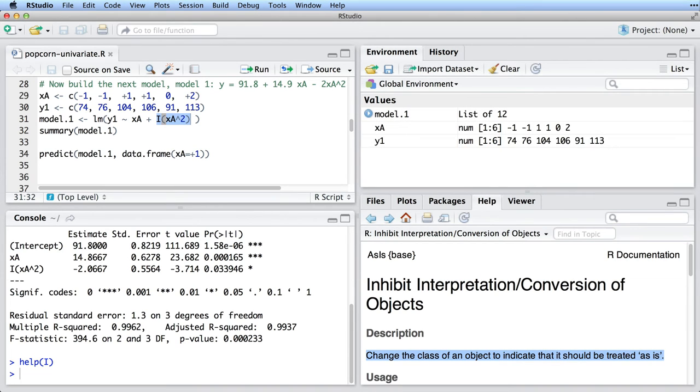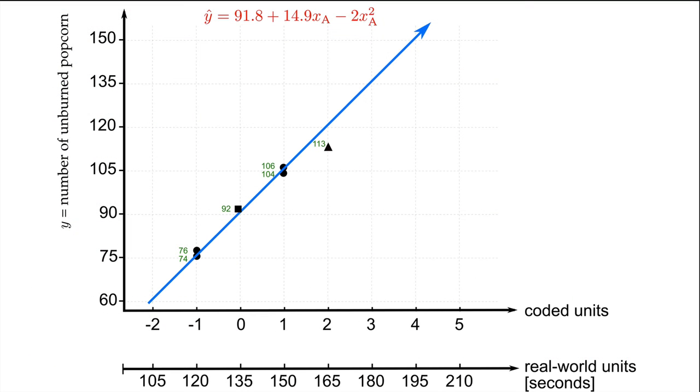So our new model is y equals 91.8 plus 14.9 xA minus 2 times xA squared. How does this new model's prediction compare? Let's go try using it at xA equals plus 1. We get a prediction of 91.8 plus 14.9 minus 2, that's 104.7. It agrees with our numbers. Try using the model at xA equals plus 2. You should have obtained a value of 113.6, which also agrees well with the experimental data. We are in better shape than before.